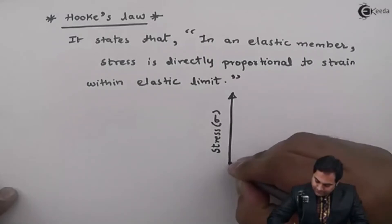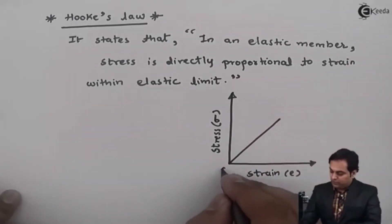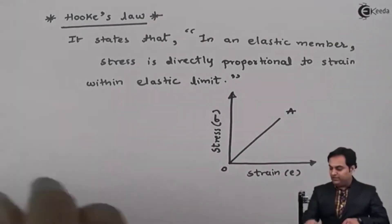So here the graph is linear. I will call it as 0 to a and within this region 0 to a.